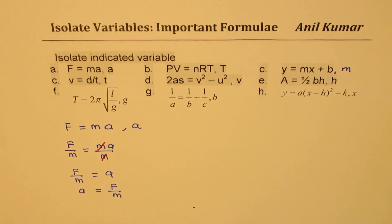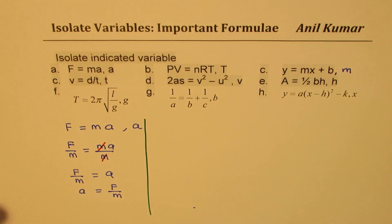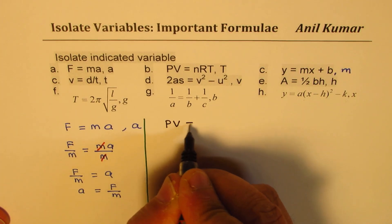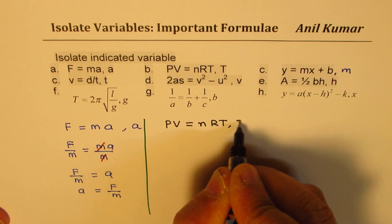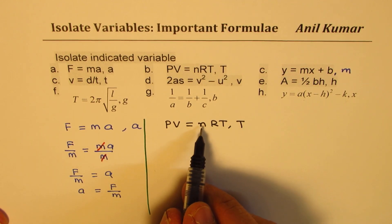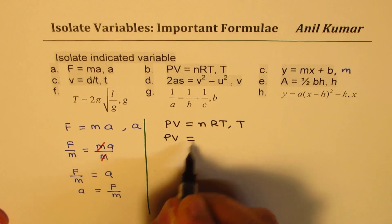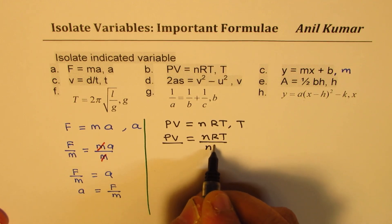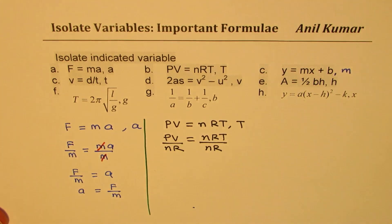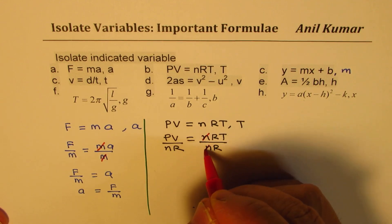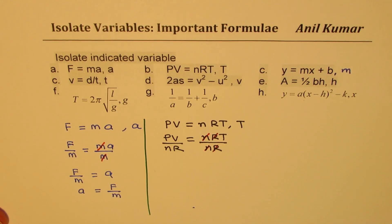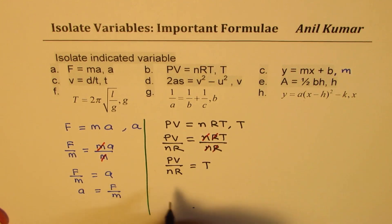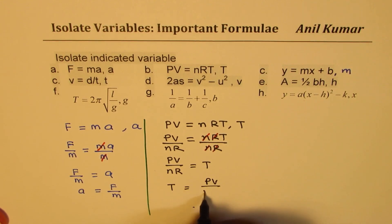Now let's take up the next one. We have PV equals to nRT and we need to isolate T. That means we do not want n and R. We follow a similar strategy and divide by n and R on both sides. n cancels with n, R with R. We have isolated T as PV over nR. So T equals to PV over nR.